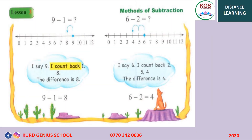We are starting on page 7 in your books. It's counting back. Do you know what count back means? When we count the numbers we say 1, 2, 3, 4, 5. But if we count back, we count from 5 to 4, 3, 2, 1, 0.